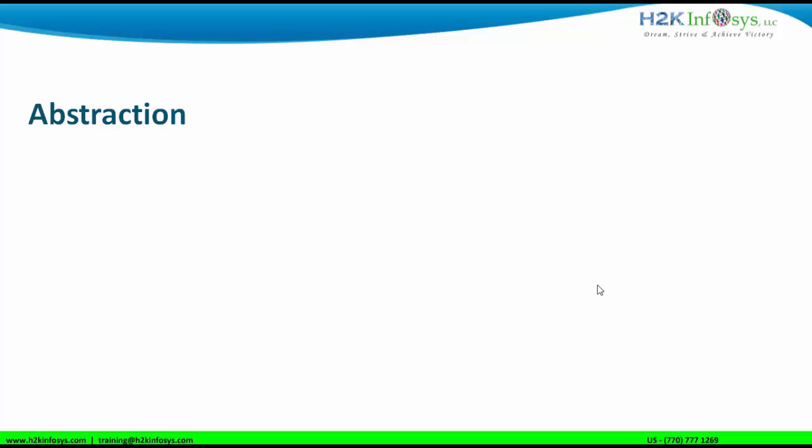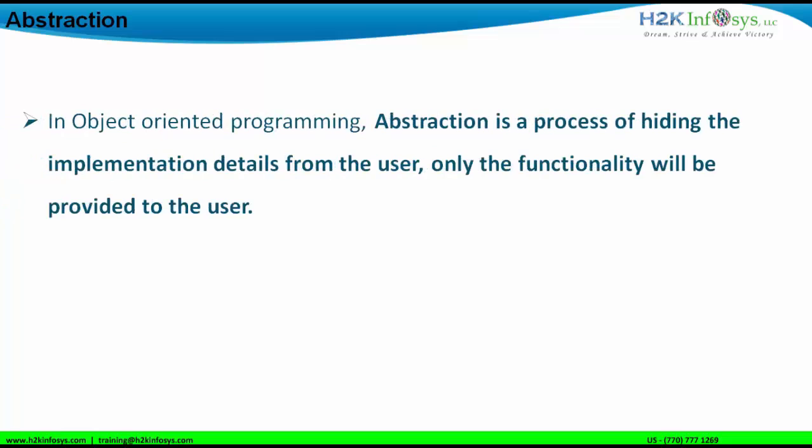In this particular session, let us understand what is abstraction. Abstraction is a process by which you hide the implementation details from the user, and the user is only provided the functionality details. Abstraction is a concept of object-oriented programming which says that you don't need to give how a particular thing is working.